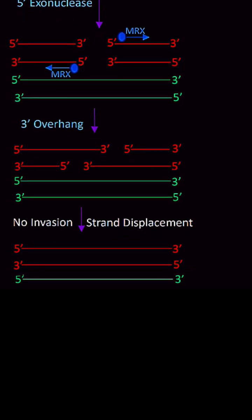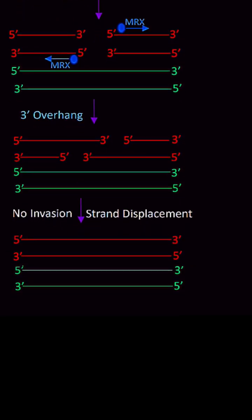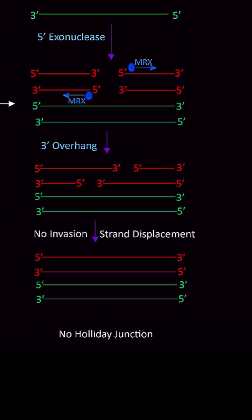Then no invasion happens here. Only strand displacement happens. In that case, no Holliday junction forms.